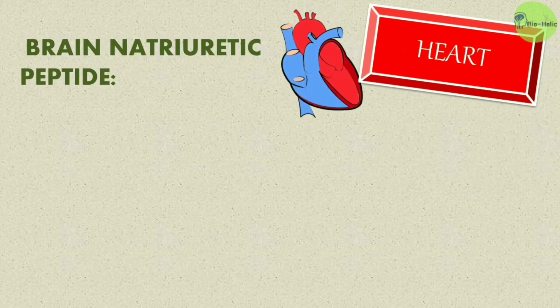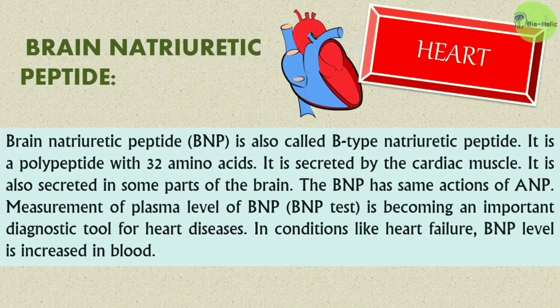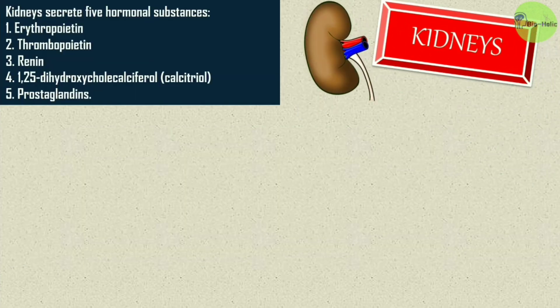Brain natriuretic peptide (BNP), also called B-type natriuretic peptide, is a polypeptide with 32 amino acids. It is secreted by the cardiac muscles and also in some parts of the brain. BNP has the same actions as ANP. Measurement of plasma levels of BNP is becoming an important diagnostic tool for heart diseases — in conditions like heart failure, BNP level is increased in the blood, so measuring BNP level can help diagnose heart diseases.